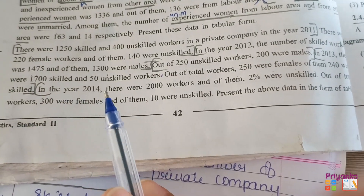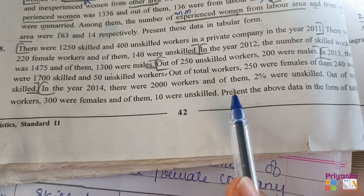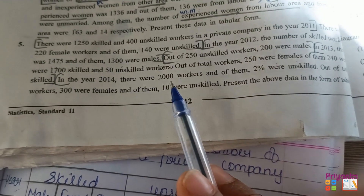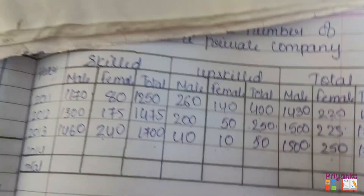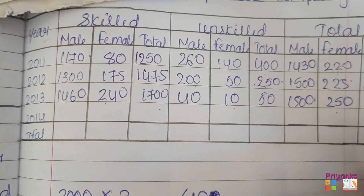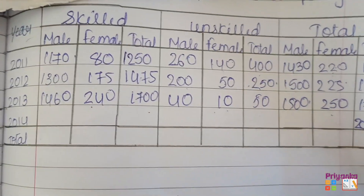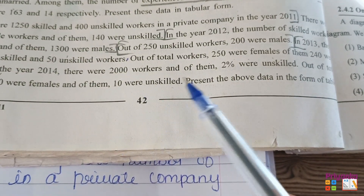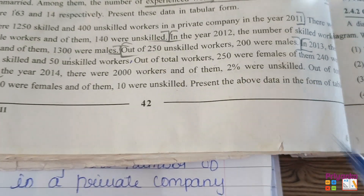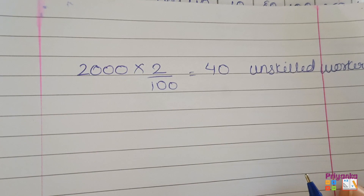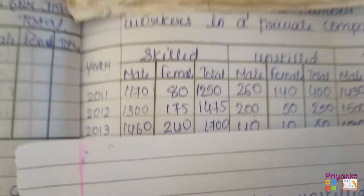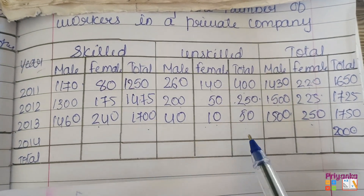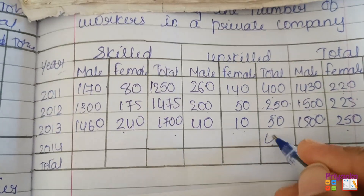In the year 2014, there were 2000 workers and of them, two percent were unskilled. First, we write down the total number of workers in 2014 was 2000. Out of them, two percent — which is 40 — were unskilled workers. After writing 2000, we write down the total number of unskilled workers as 40.